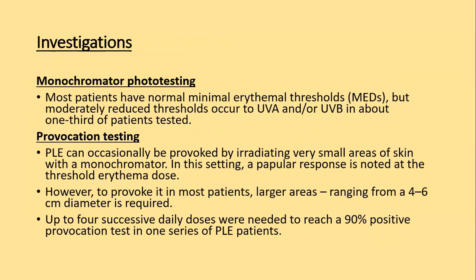Investigations. Monochromator phototesting: most patients have normal minimal erythema thresholds, but moderately reduced thresholds to UVA or UVB occur in about one-third of patients tested. Provocation test: PLE can occasionally be provoked by irradiating a very small area of skin with a monochromator, where a papular response is noted at the threshold erythema dose. However, to provoke it in most patients, large areas of four to six centimetres squared are required. Up to four successive doses are needed daily to reach a 90% positive provocation test in one series.